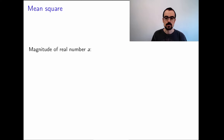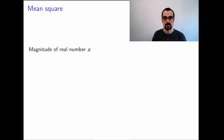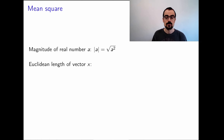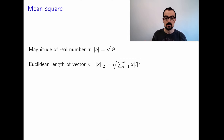Let's begin with the mean square. Before that, let's think about how we measure the magnitude of numbers and vectors. For numbers, we think of the magnitude of a real number as just its absolute value, which can be written as the square root of its square. For vectors, we often use the Euclidean length, which is its L2 norm — the square root of the sum of the squares of its entries.